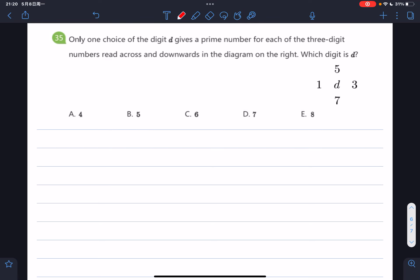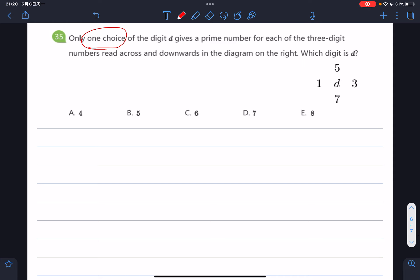Okay, number 35. Only one choice of the digit D gives a prime number for each of the three-digit numbers read across and downwards in the diagram on the right. So which digit is D?